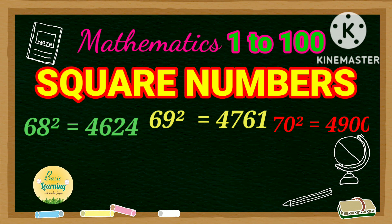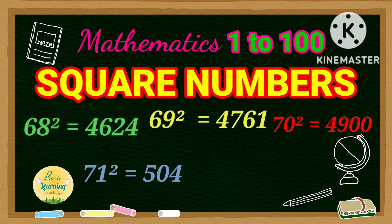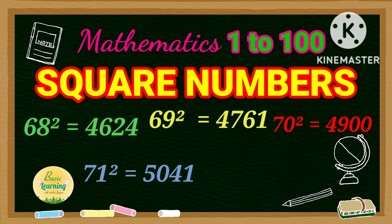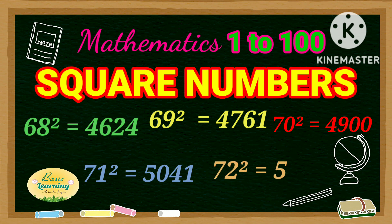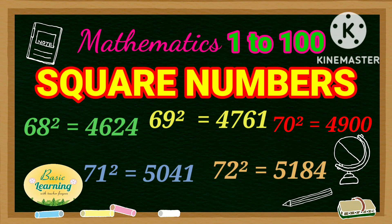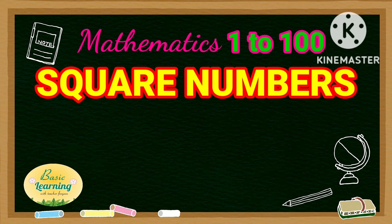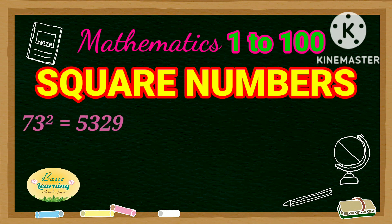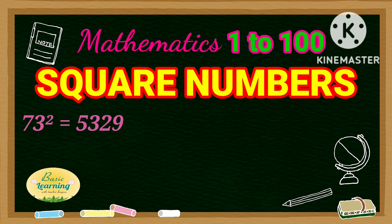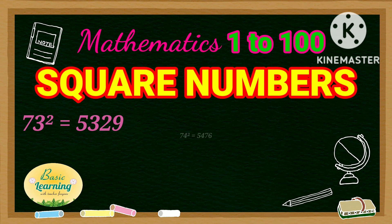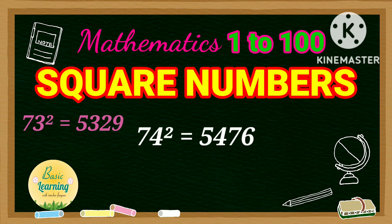Square of 70 is 4,900. Square of 71 is 5,041. Square of 72 is 5,184. Square of 73 is 5,329. Square of 74 is 5,476.